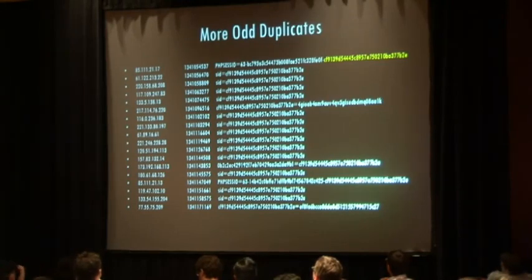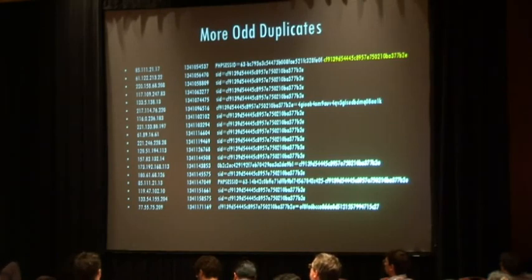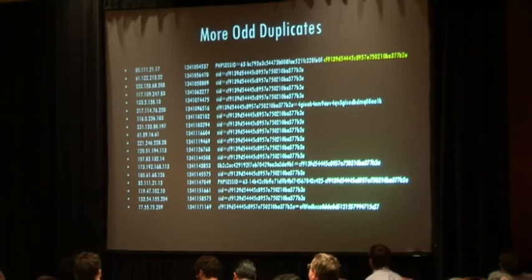A weird finding: a lot of PHP servers have the exact same session ID — CF9139DF5544 — which applies not just to PHP but to a whole suite of other applications. Every server that had this session ID was also out of disk space and spitting out errors. It may be that when PHP runs out of disk space, its session generator breaks and starts outputting a static session ID. If that's the case, the attack would be: fill up the disk space on the web server, then wait for the admin to log in and steal the session.